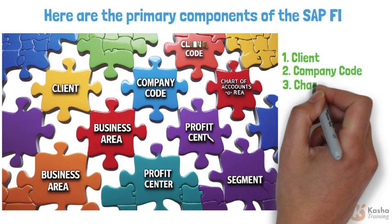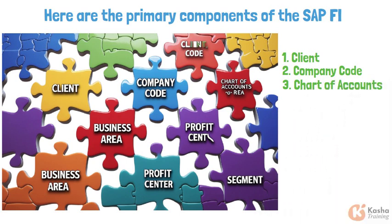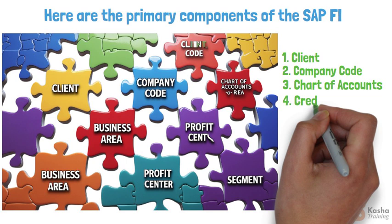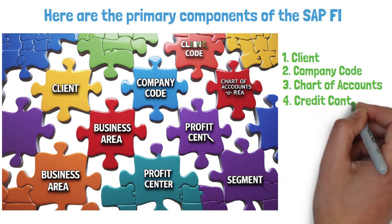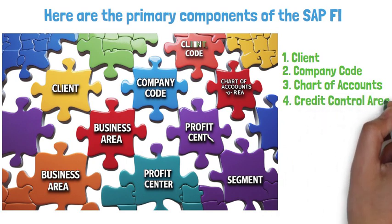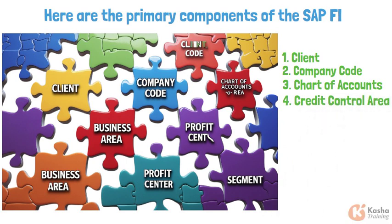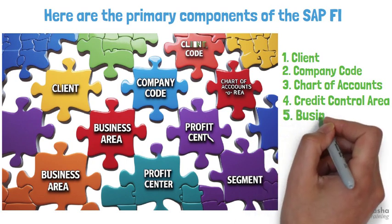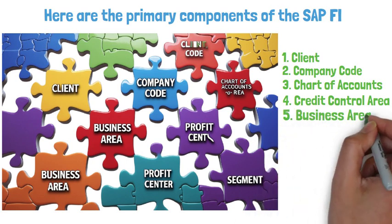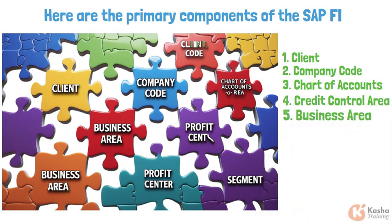3. Chart of accounts: a list defining all accounts used in the company code. 4. Credit control area: defines credit limits for customers and manages credit risk. 5. Business area: represents specific segments of operations for internal reporting.